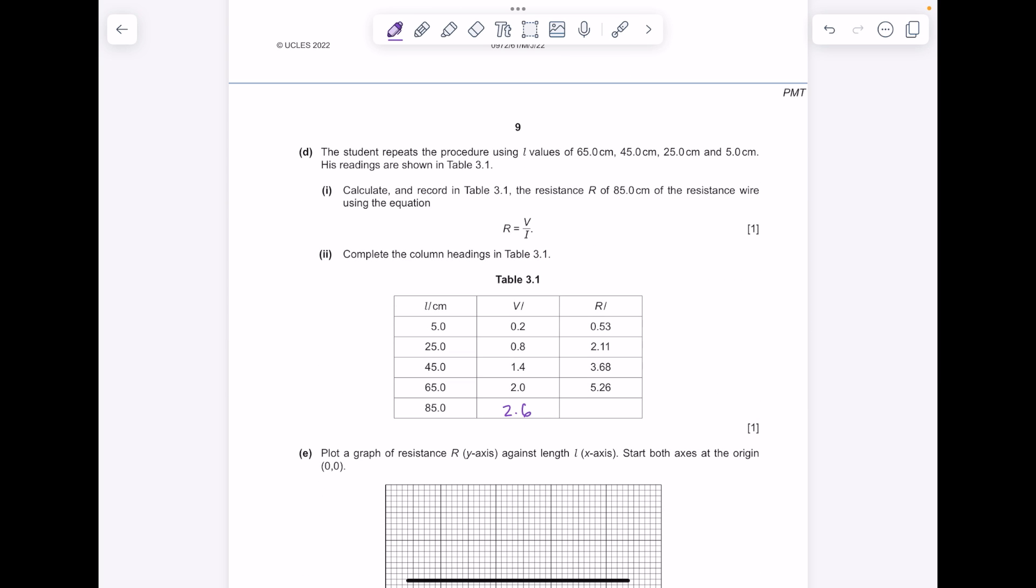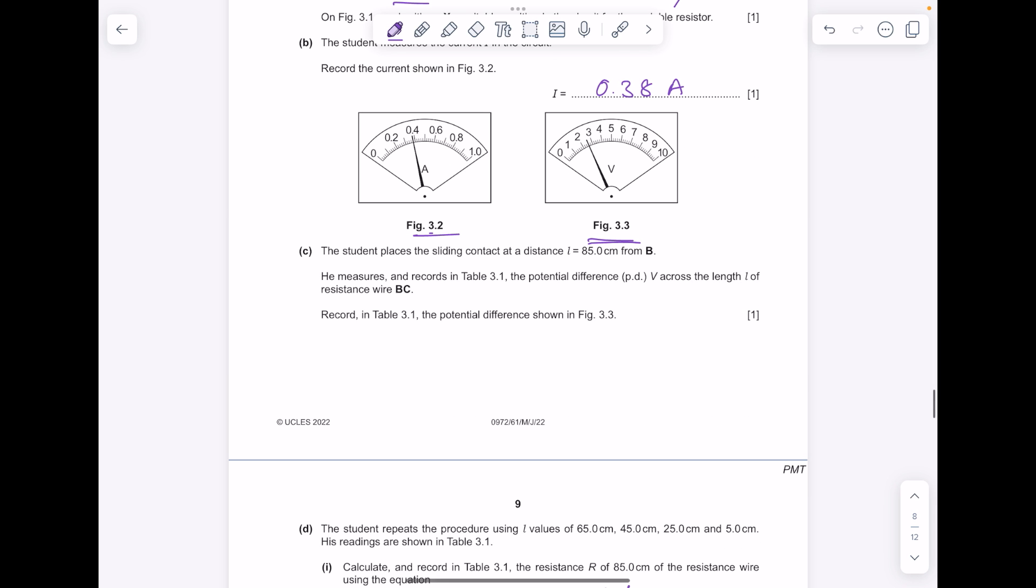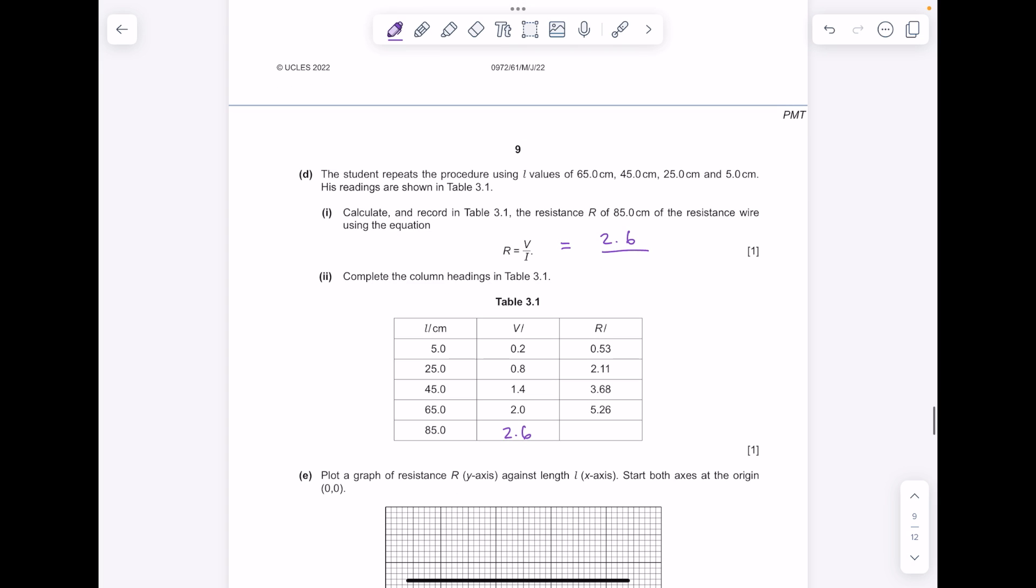The student repeats the procedure using L values. His readings are shown in table 3.1. Calculate and record in table 3.1 the resistance R of 85 centimeters of the resistance wire using this equation. So let's take that potential difference of 2.6, our current reading was 0.38. Put that into your calculator and you'll get an answer of 6.84.